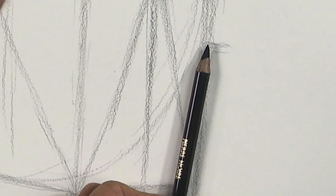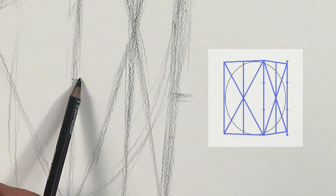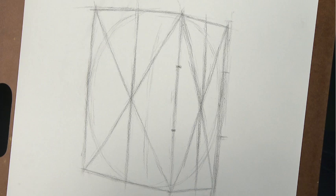Now transfer the increments from the line at the right of the skull to the corner line of the box. Now start adding elements of the head using the vertical lines in the center of each plane of the skull.